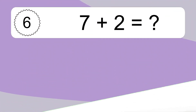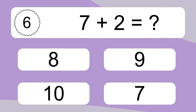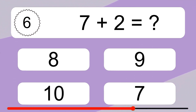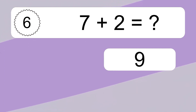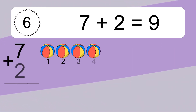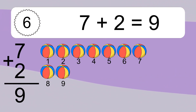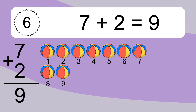7 plus 2 equals what? 7 plus 2 equals 9. Let's count it. 1, 2, 3, 4, 5, 6, 7, 8, 9.